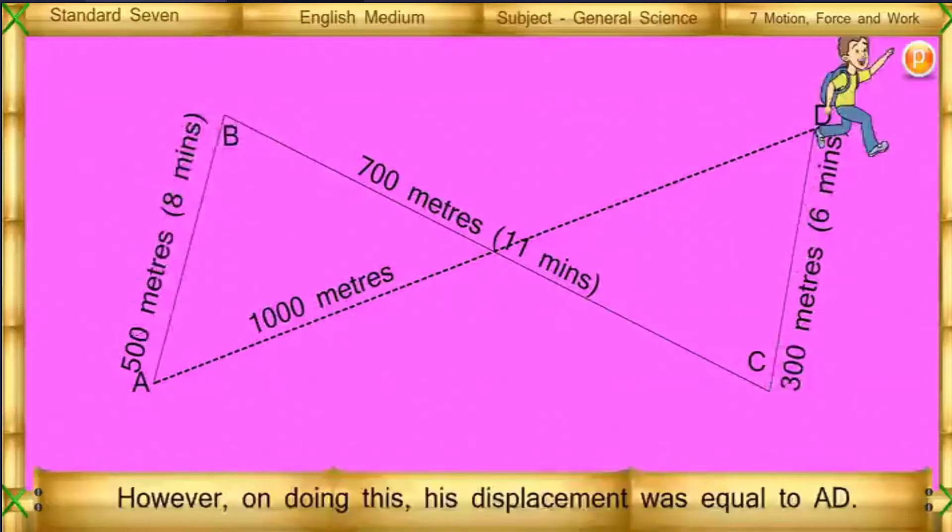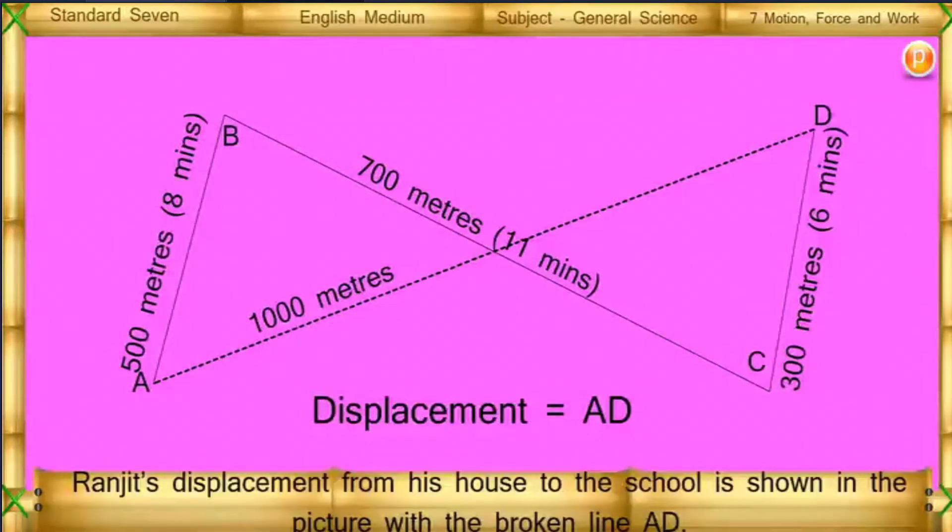However, on doing this, his displacement was equal to AD. Ranjit's displacement from his house to the school is shown in the picture with a broken line AD.